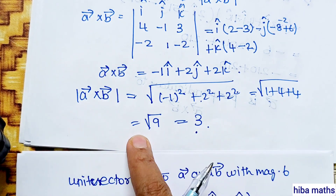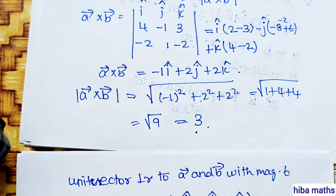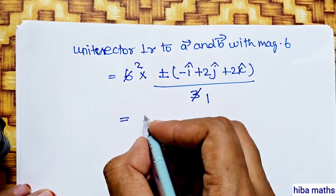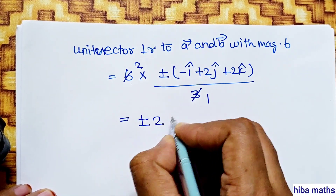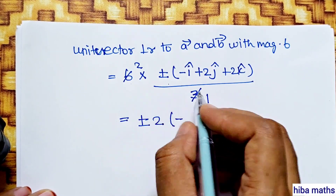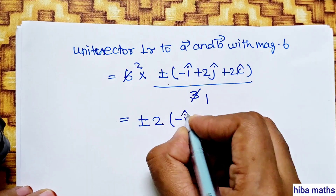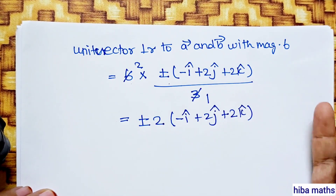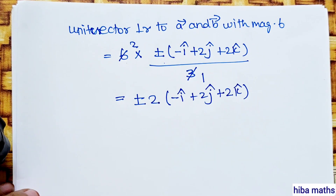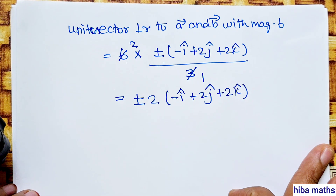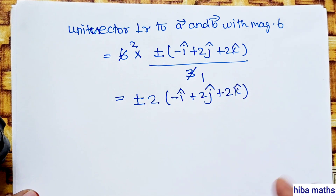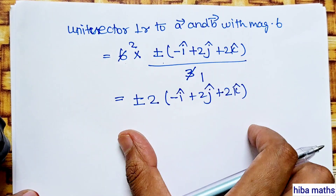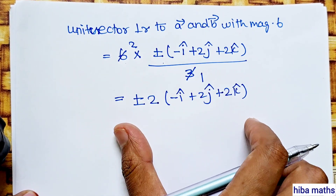6 into plus or minus A vector cross B vector value minus i plus 2j plus 2k divided by 3. So plus or minus 2 into minus i plus 2j plus 2k. This is the unit vector perpendicular to A vector and B vector with magnitude 6. We will stop here.